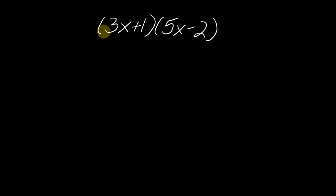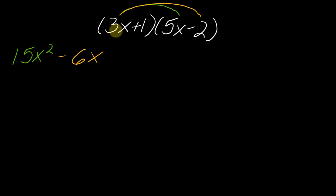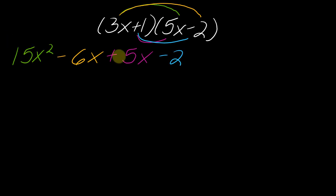I'm going to start with 3x. So I'll take 3x times 5x, which gives me 15x squared. Then I continue with 3x and multiply it by the negative 2, giving minus 6x. I've now taken everything in the second polynomial times the first term. Now I pivot and multiply everything by the second term: 1 times 5x is plus 5x, and 1 times negative 2 is negative 2. So collecting like terms, this becomes 15x squared minus x minus 2.